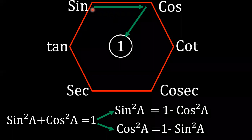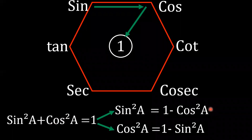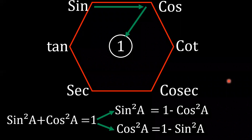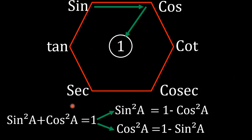This is the main formula we can obtain from this magical hexagon. From this formula, you can derive two more formulas. If you take cos squared a to the right-hand side, then you get sine squared a = 1 − cos squared a. If you take sine squared a to the right-hand side, you get cos squared a = 1 − sine squared a. This is a squared relation — it must be in squared form. You can't say sine squared a + cos a = 1, or sine to the power 4 a + cos to the power 4 a = 1; it doesn't hold true.